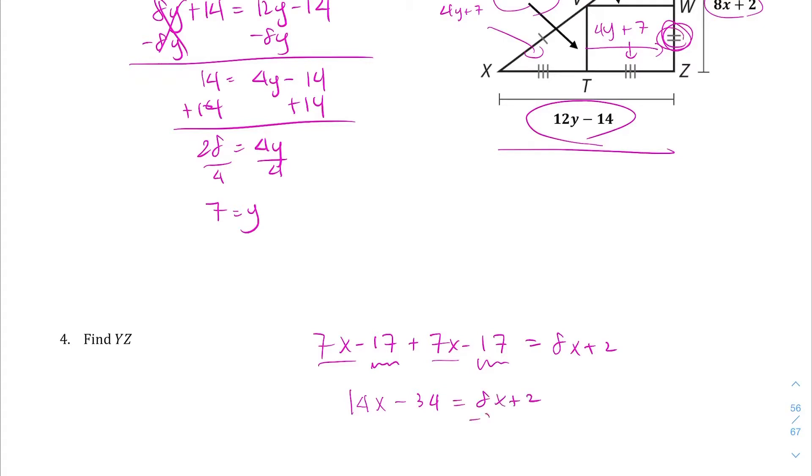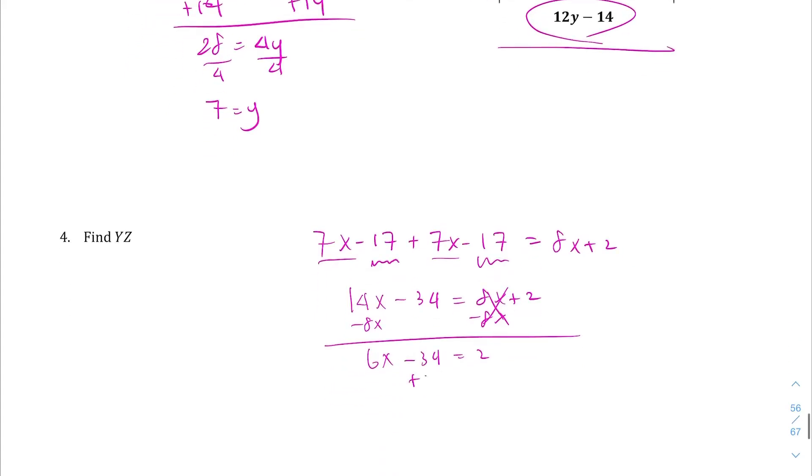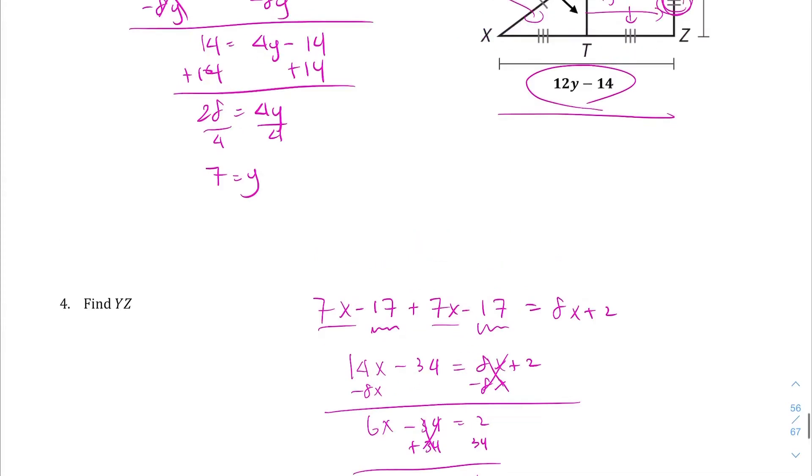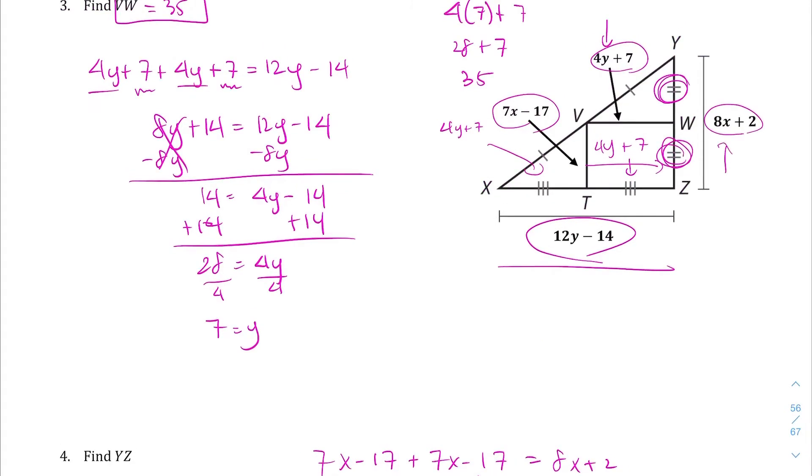Let's move the smaller one, subtract 8X from both sides. That goes away, we get 6X minus 34 equals 2. Then we're going to add 34 to both sides. This goes away, we get 6X equals 36. Divided by 6, X equals 6.